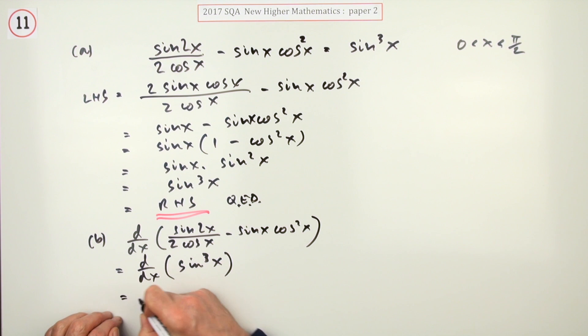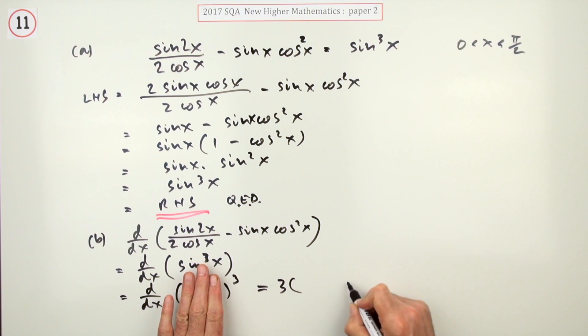So, I think I'll rewrite that, especially as d by dx, I must have given that a name now, of sine x all cubed. Now, you can see the function of the function. Outer function cubed. So, that'll go three times the thing squared. What was the thing? It was sine x. Now, multiply by the derivative of the inside, so that's times cos x.